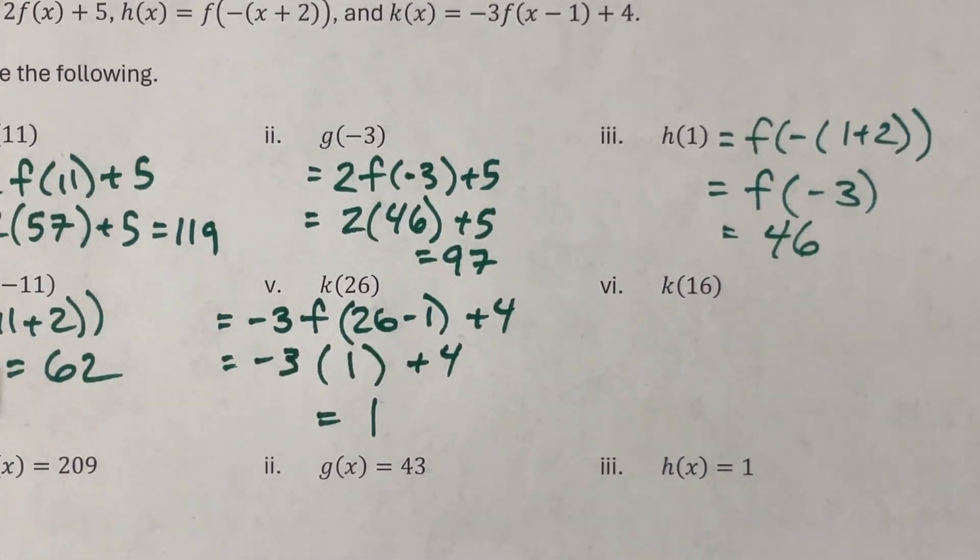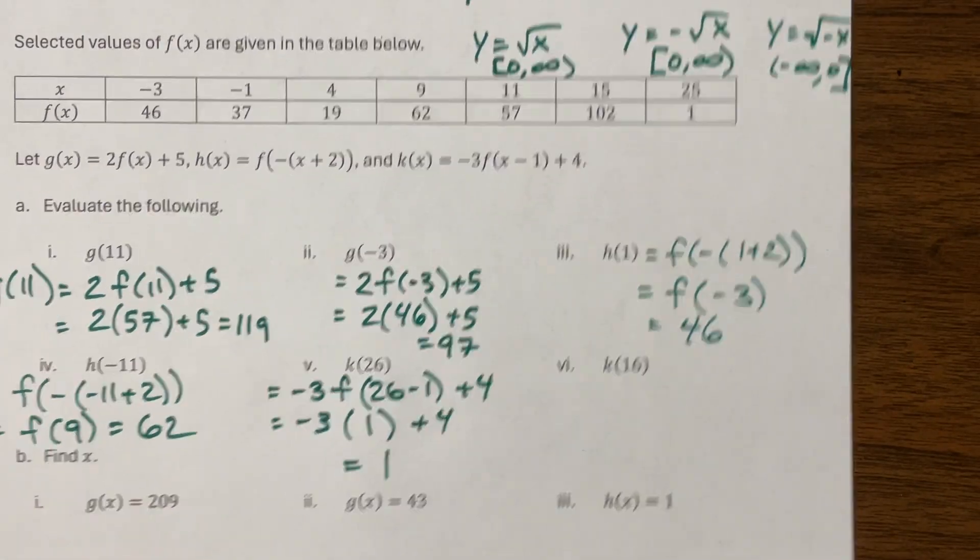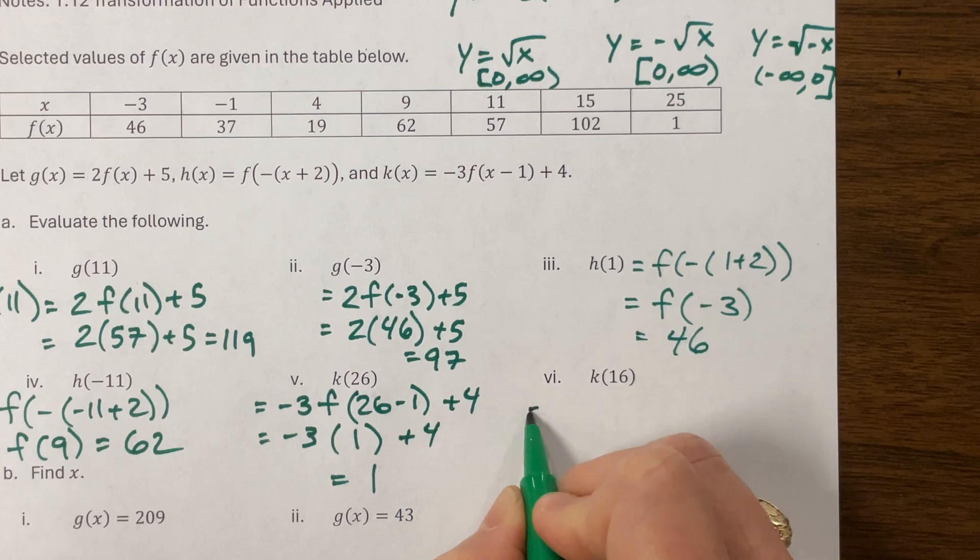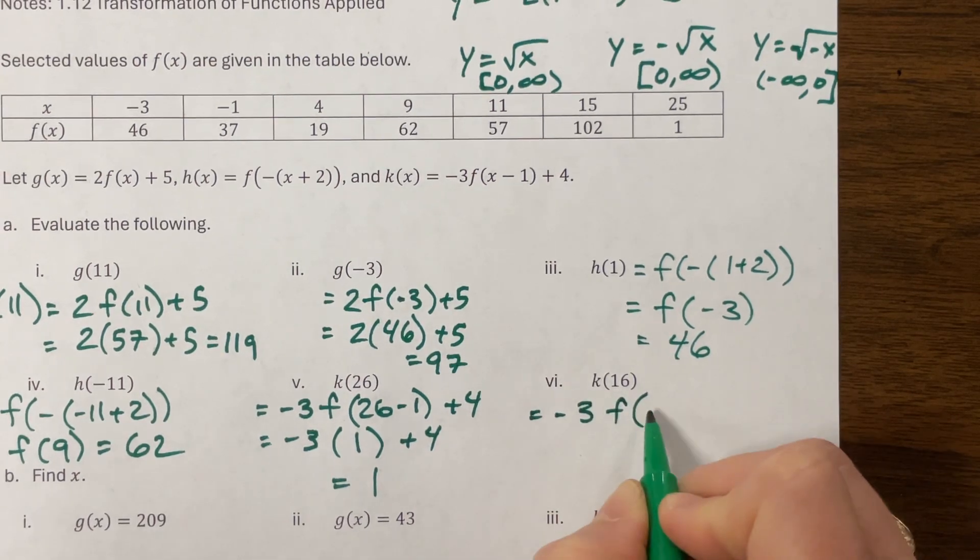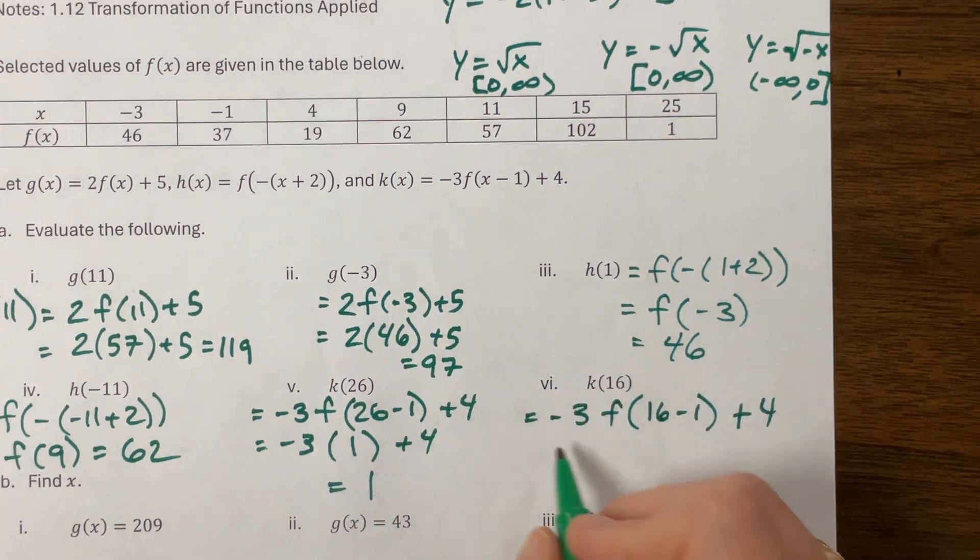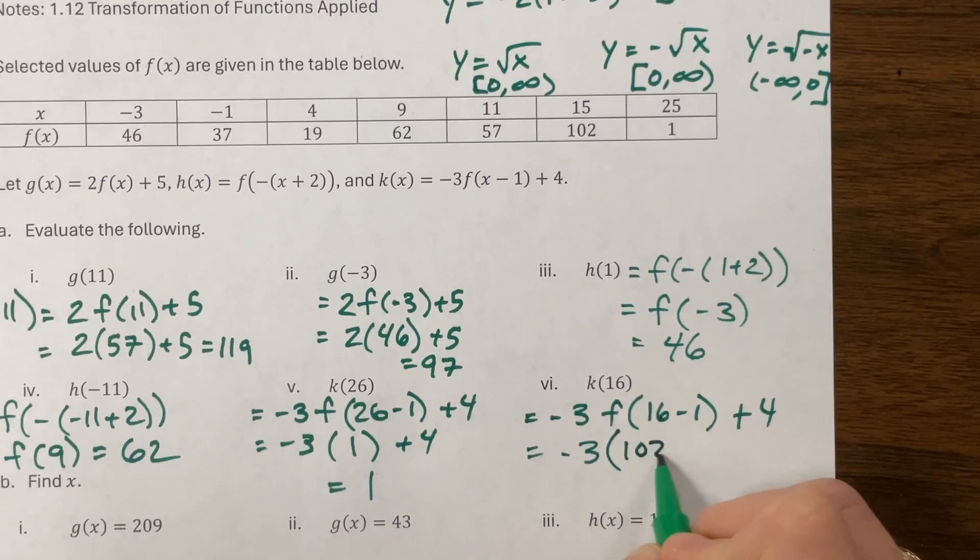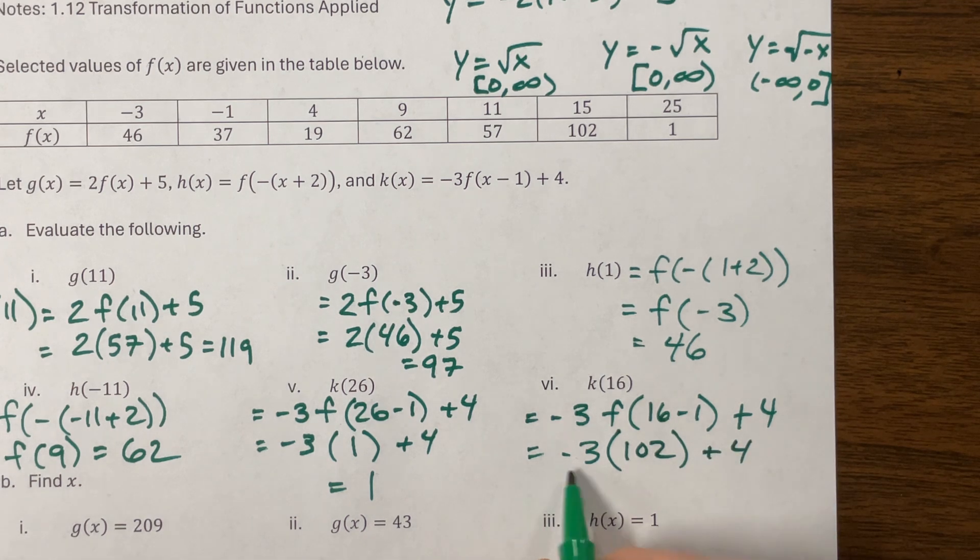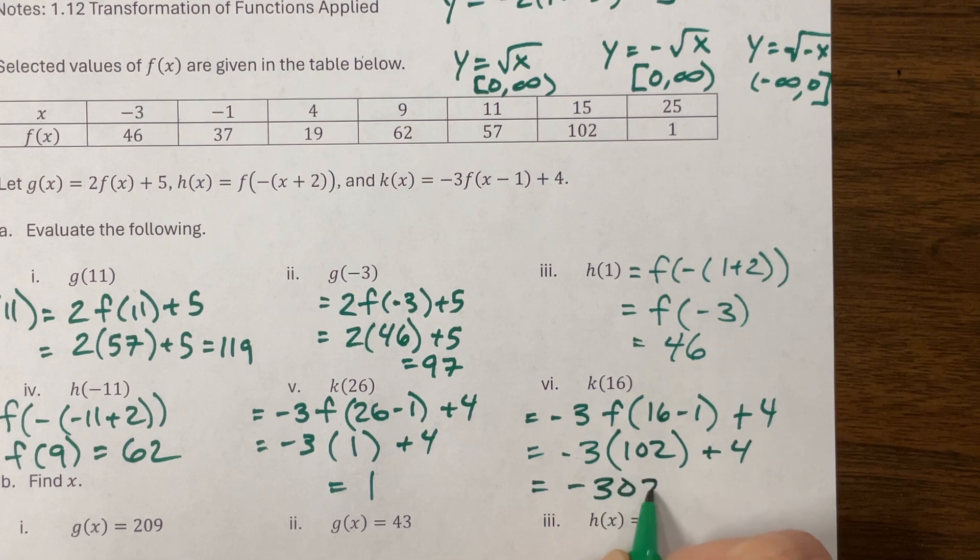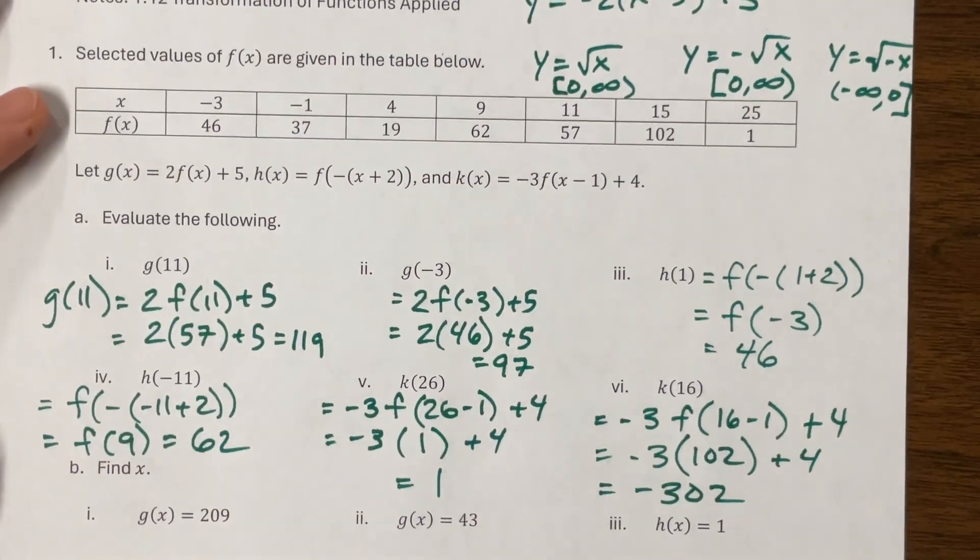Oh, I'm sorry, you couldn't see my work. I think I may have zoomed in too much. K of 16 would be equal to a negative 3 F of 16 minus 1 plus 4. Using that equation right there. This becomes a negative 3 times F of 15. F of 15 is 102. That gives me 306. So a negative 306 plus 4 is going to be a negative 302. And there we go.